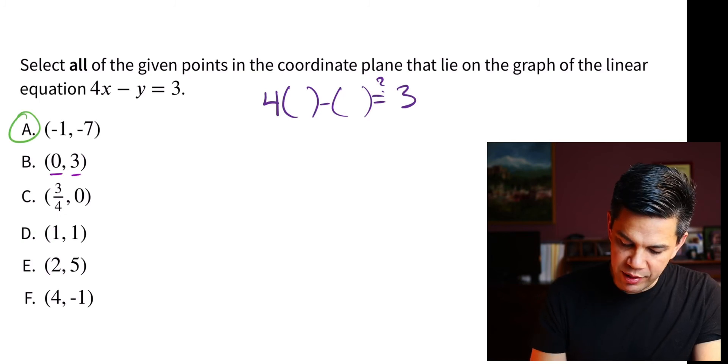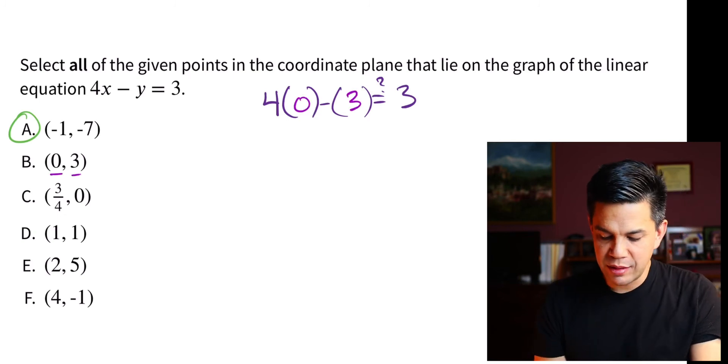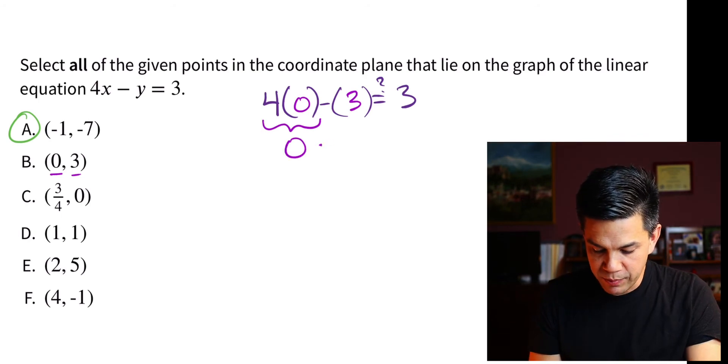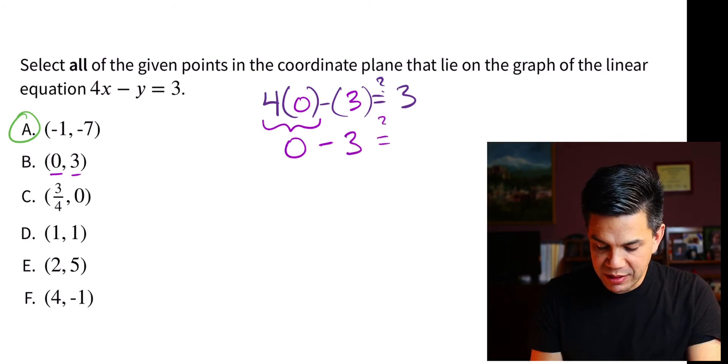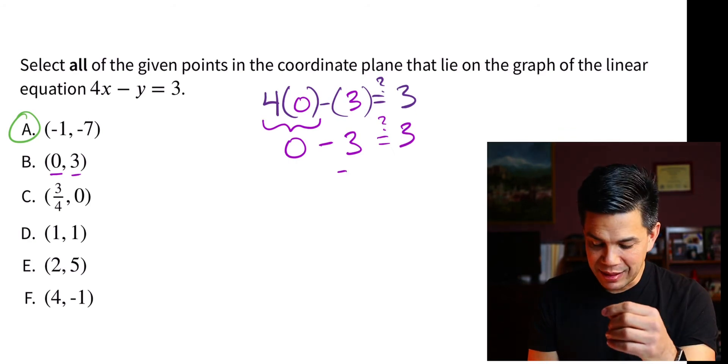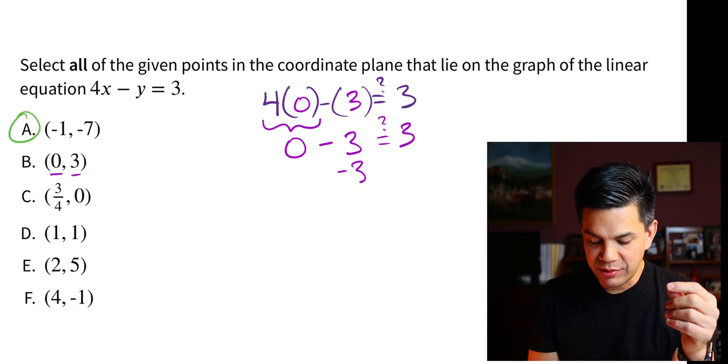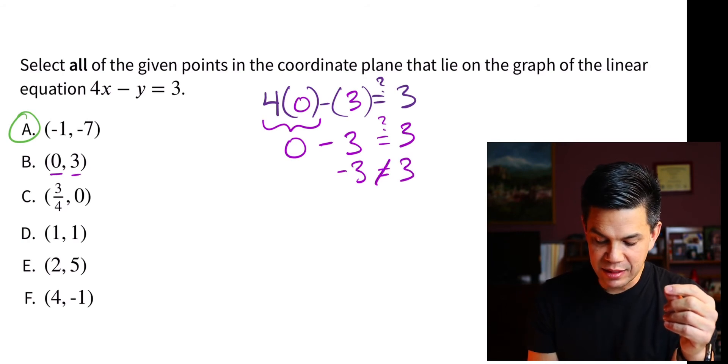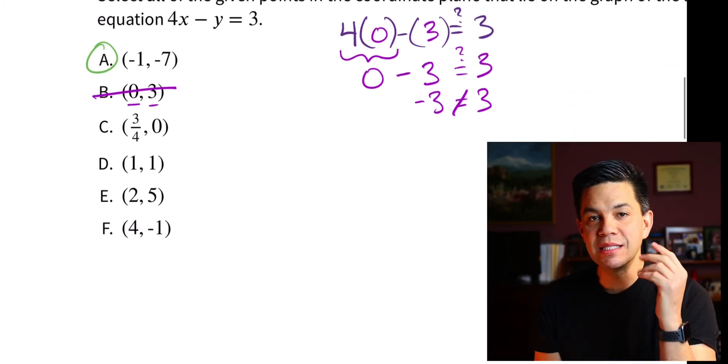Let's go on to b, 0 and 3. Drop those in there, 0 and 3. Evaluate the 4 times 0 is 0. Minus 3, does that question mark equal 3? I don't think it does. If you have 3 and you subtract it from 0, you're going to end up with negative 3. In this case, this is not equal. B is not going to work.